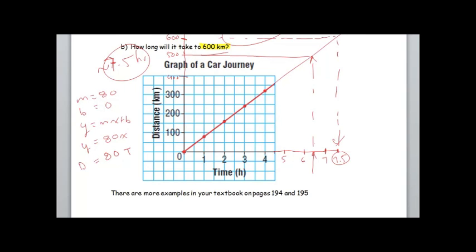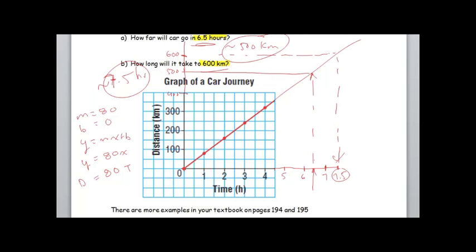Now in part a we were asked, well how far will the car go in 6.5 hours. Well now if we use this equation we can put in 6.5 hours right into the equation and we can get, what's that going to be, 480 plus 40, that's going to be 520. What was our estimate? 500, okay we're close, that's not bad.